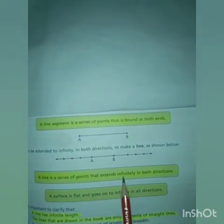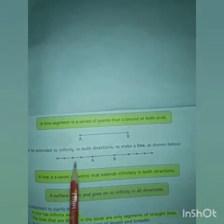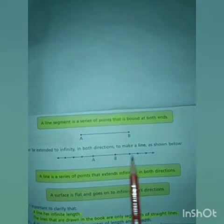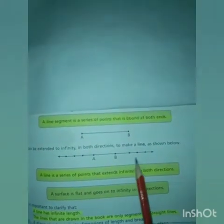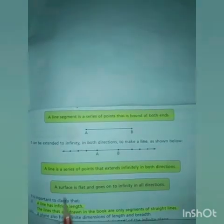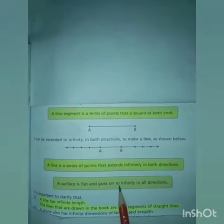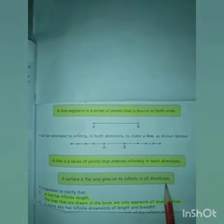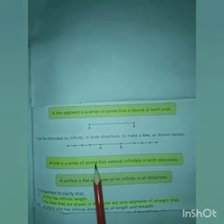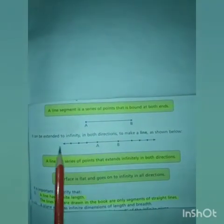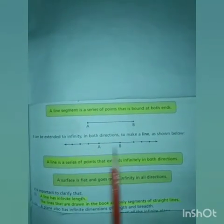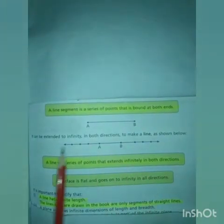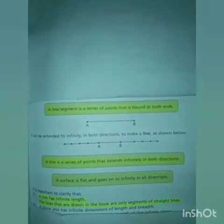A line is a series of points that extends infinitely in both directions — jis ko hum dono sides par, dono direction mein baṛha sakte hain. A surface is flat and goes on to infinity in all directions — jis ke liye koi bhi limit nahi hai. Aap jitni length chahein, apni right side par is point se aur is point se left side par, is ki length ko baṛha sakte hain. It is important to clarify that a line has infinite length.